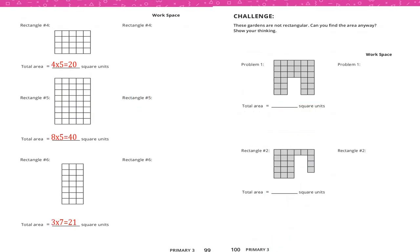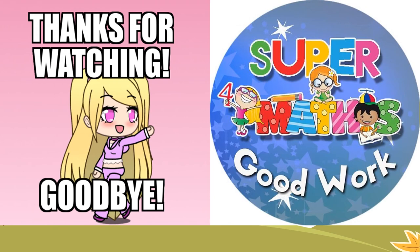Challenging problem: For the first garden shape, count the small squares — we find 30 square units. For rectangle number 2, count the small squares — we find 21 square units. Thank you for watching and goodbye!